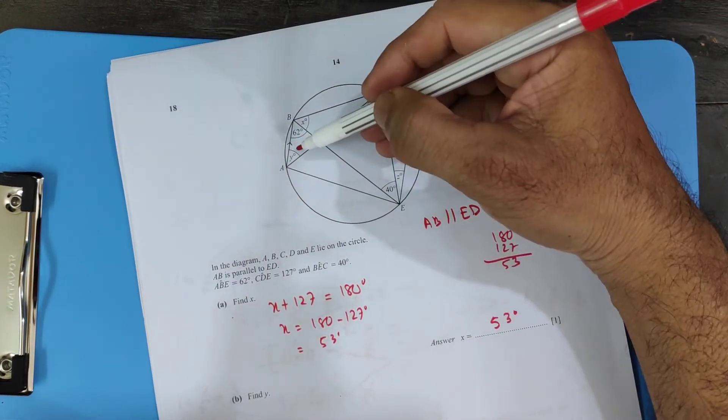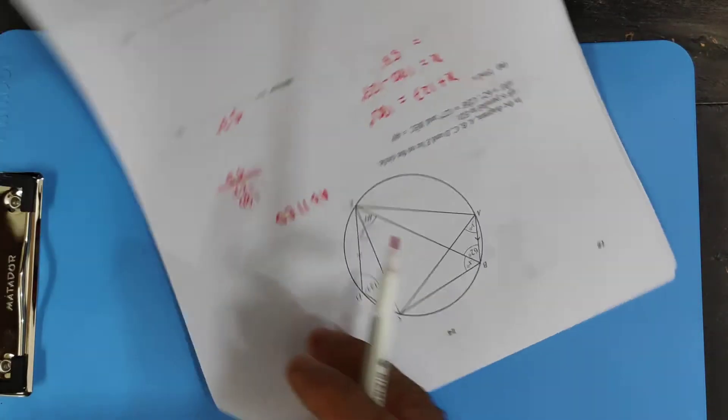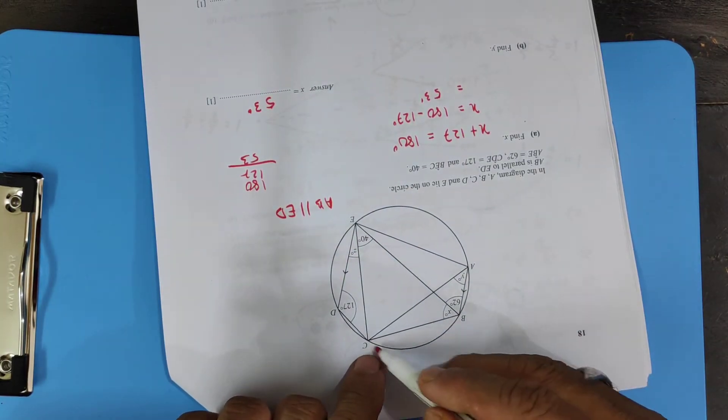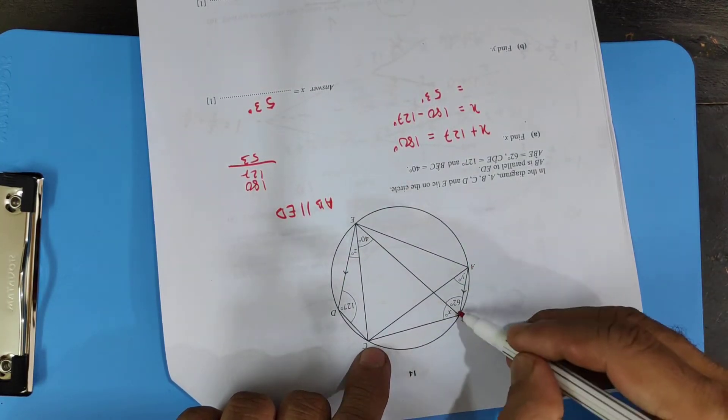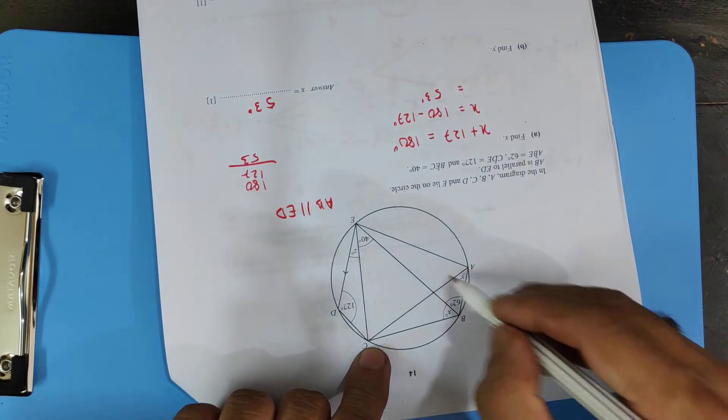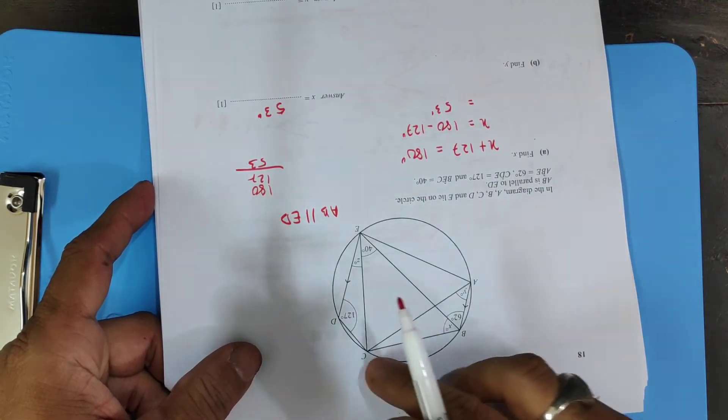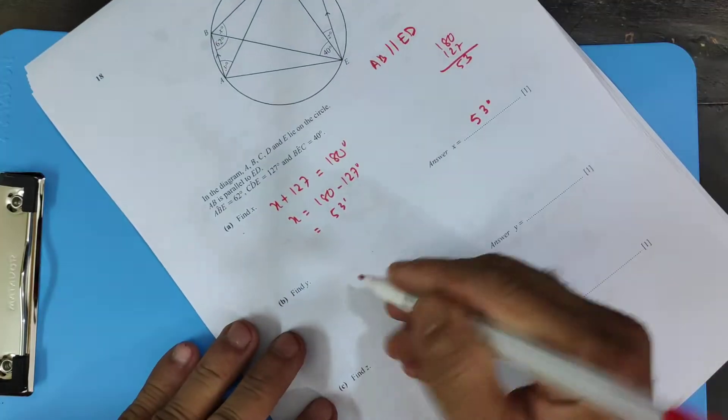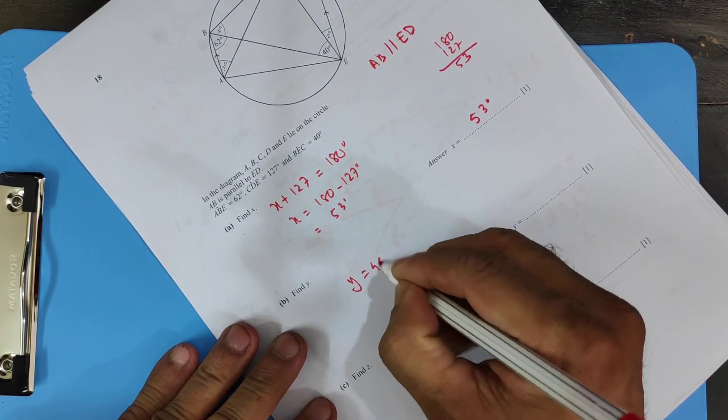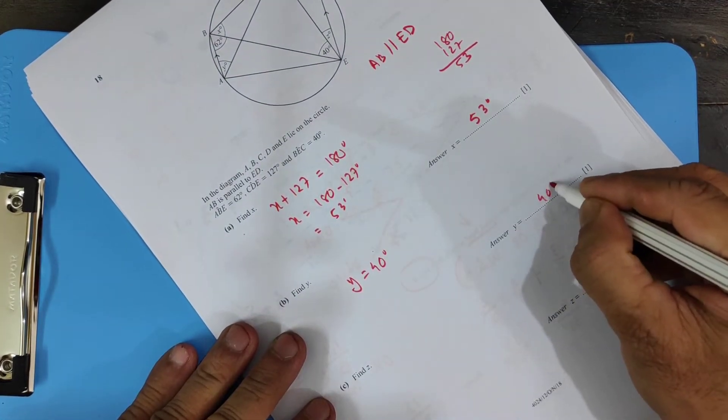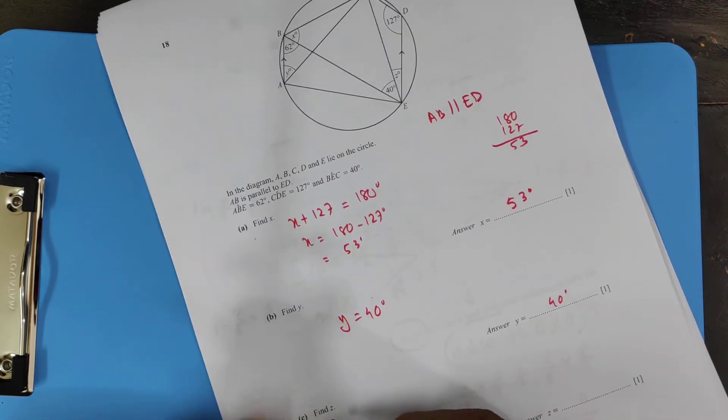Find y. Now y is over here. From this arc length b c, this is y, and same way is 40. So y equals 40, angle subtended from the same arc length. So y equals 40 degrees. One mark, no explanation required. They didn't ask for one.